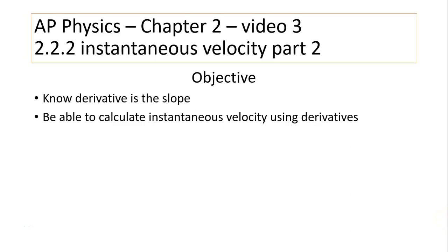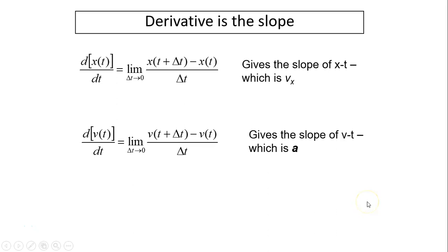Hi, this is Mrs. LaBarbera. This is AP Physics Chapter 2, Video 3. Today's topic is instantaneous velocity, Part 2. To use derivatives, know that the derivative is the slope. In the x-t graph, that slope is vx, so we know derivative is vx equals dx over dt. In the v-t graph, the slope is acceleration.